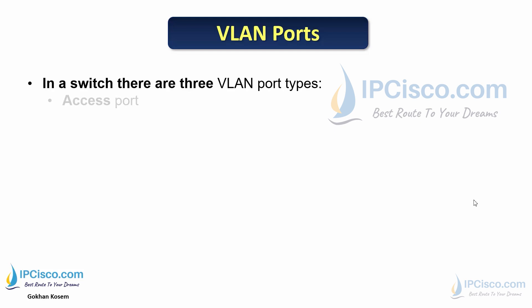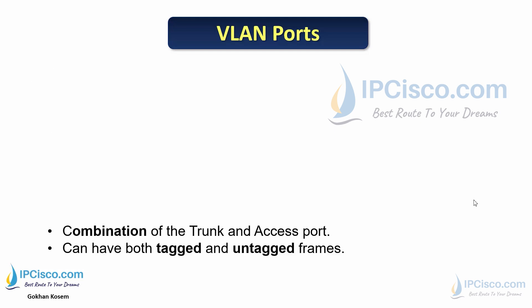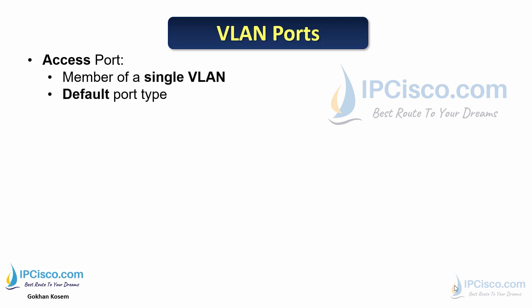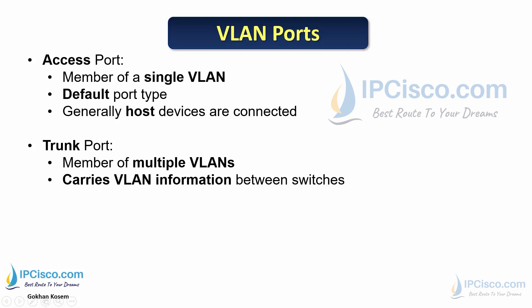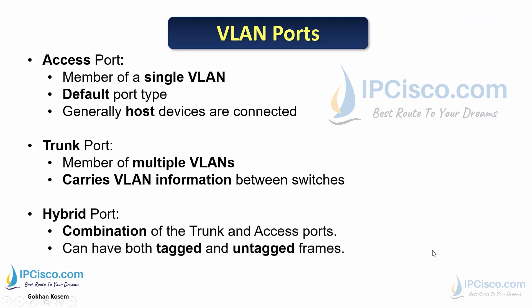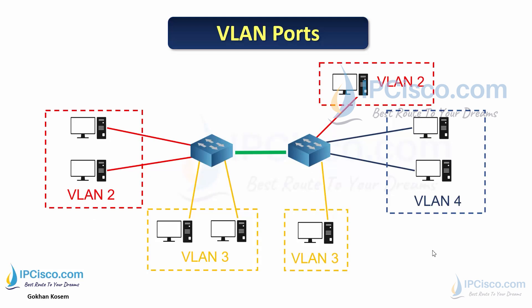There are three VLAN port types: access port, trunk port, and hybrid port. An access port is a member of a single VLAN and is the default switch port type — host devices are typically connected to access ports. A trunk port is a member of multiple VLANs; when using VLANs across multiple switches, connect them with trunk ports to carry VLAN information between switches. A hybrid port is a combination of trunk and access ports, supporting both tagged and untagged frames. On screen, the yellow ports toward host devices are access ports, and the ports between switches are trunk ports.